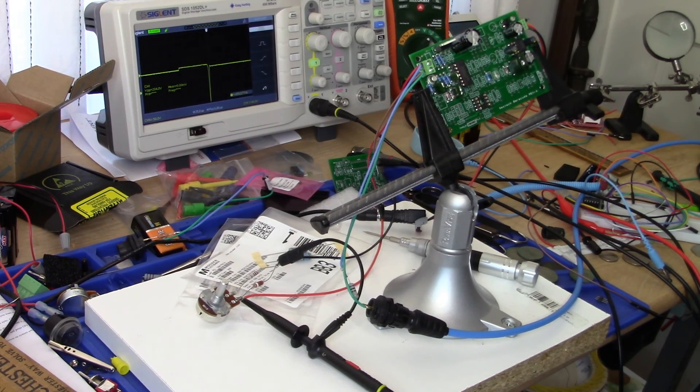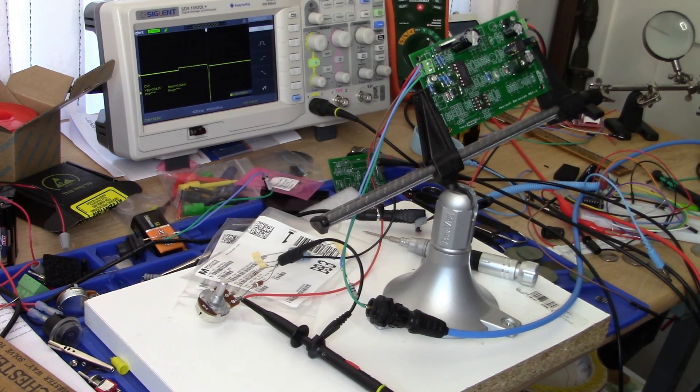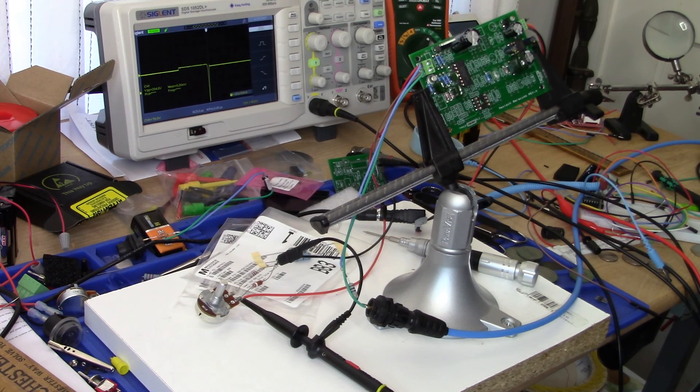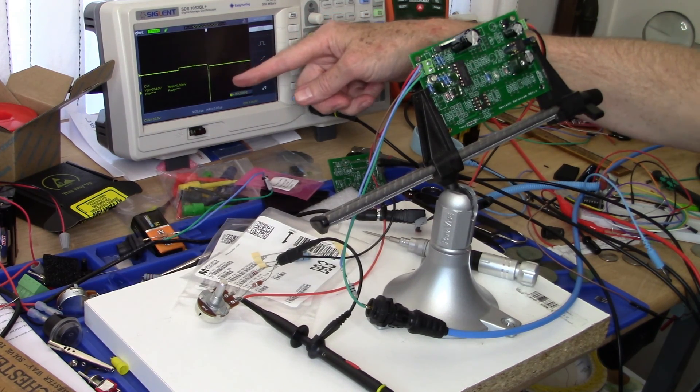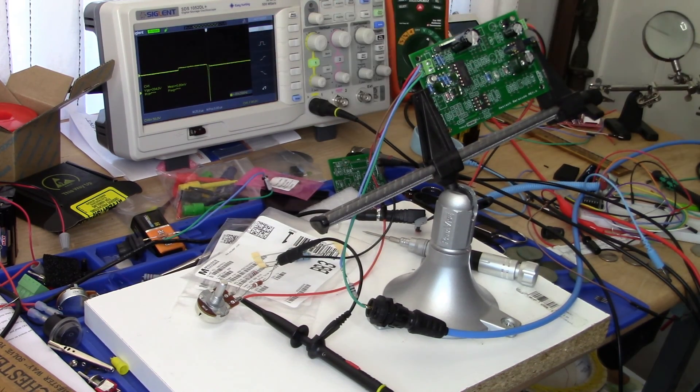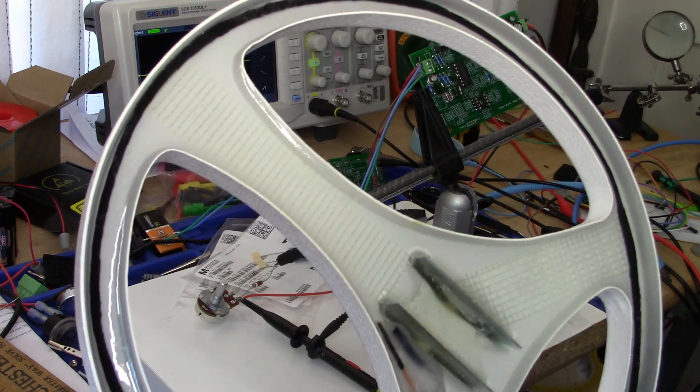All right guys, still on step four. One thing that I neglected to do previously was to show you how you can see that the transmit circuit is working properly if you do not have an oscilloscope. Obviously I have an oscilloscope and you can see the flyback voltage here on my screen, but if you have a high impedance speaker, you can take your coil right here and...